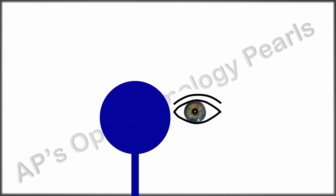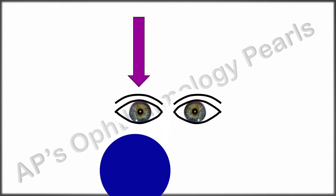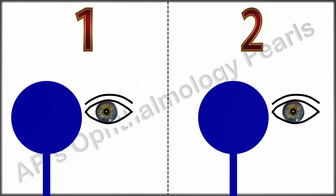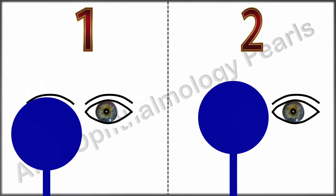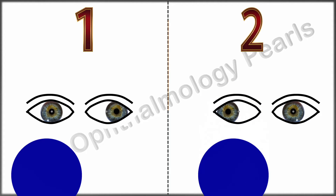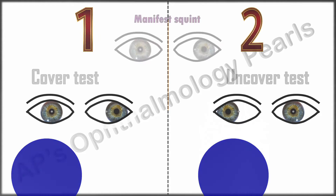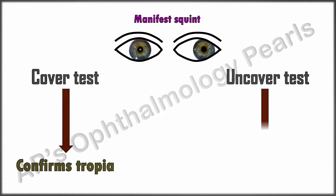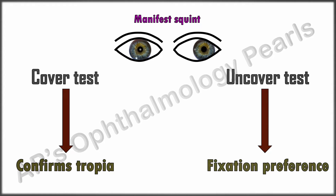For the uncover part of the test, the cover is removed and the previously occluded eye is now observed. One of two things will happen: the just-uncovered eye will move to take up fixation, indicating a fixation preference and therefore a constant strabismus; or it remains deviated, allowing the other eye to be the fixing eye, indicating an alternating heterotropia. Thus in a manifest strabismus, the cover test confirms the tropia and the uncover test tells you the fixation preference.